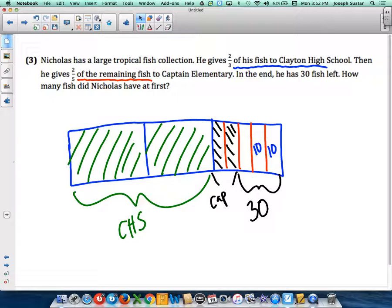So this is 10 fish, this is 10 fish, this is 10 fish. These also have to be 10 fish. So this original third is 10 times 5 or 50. If this third is 50...